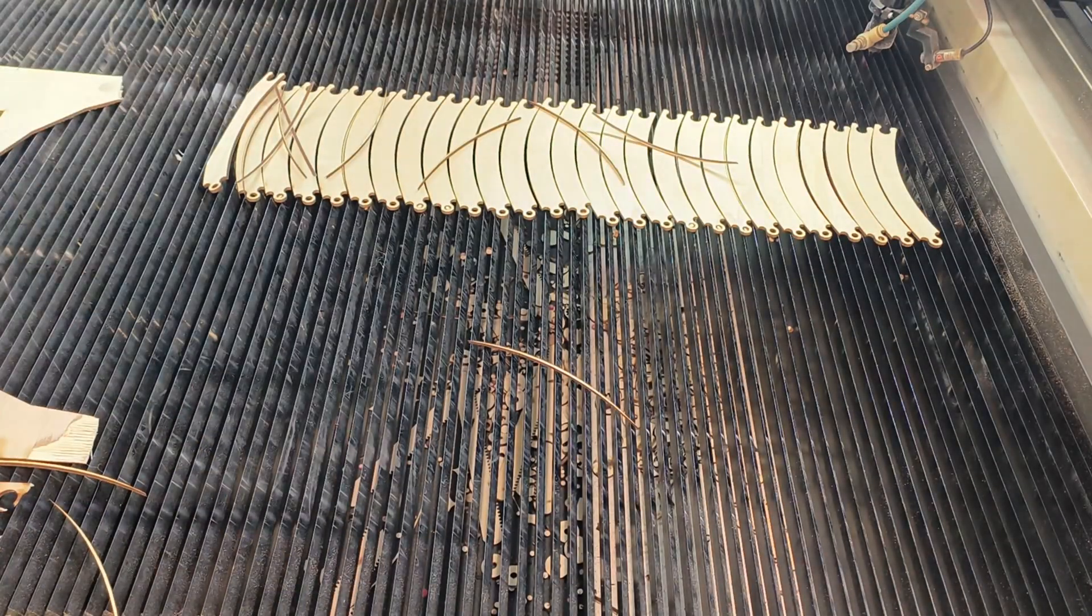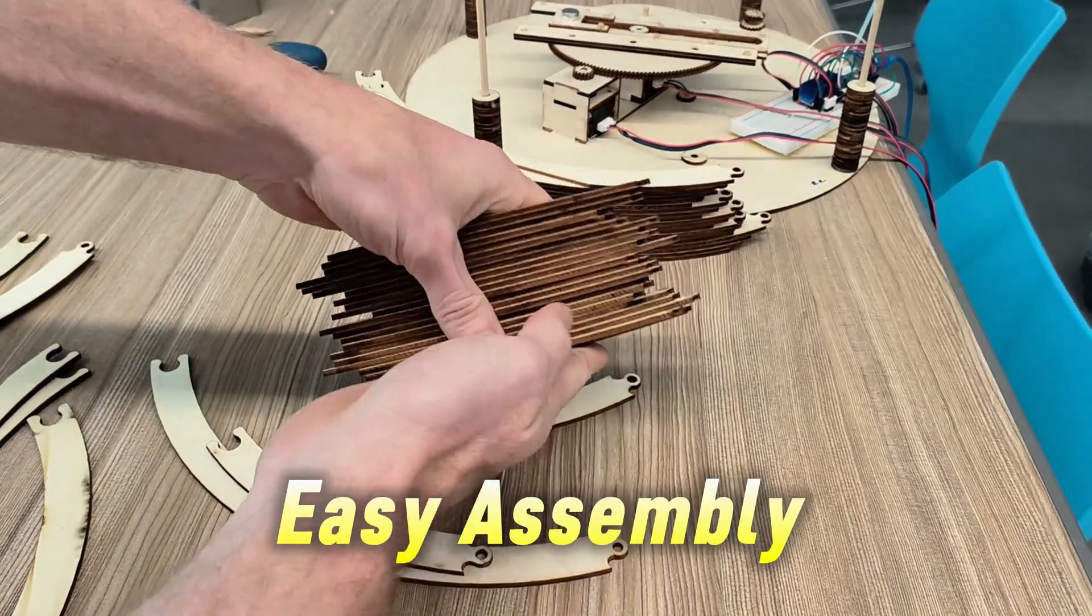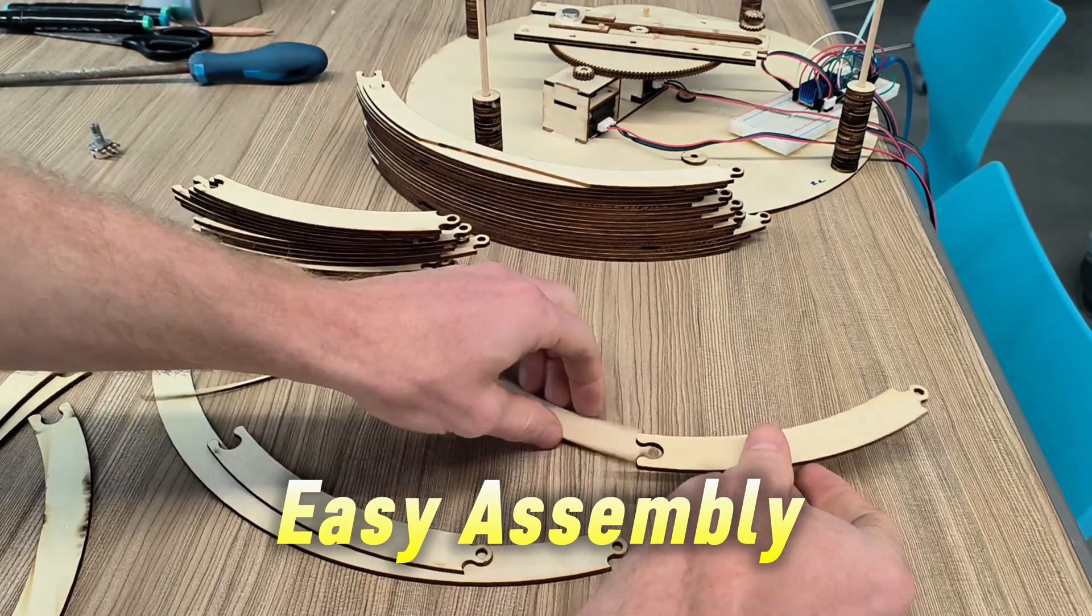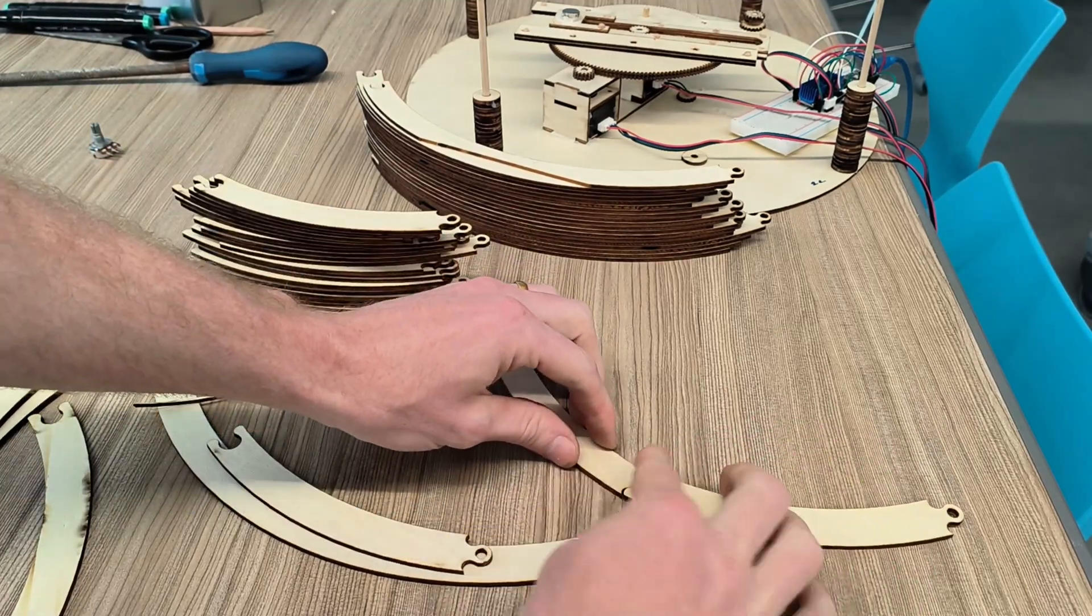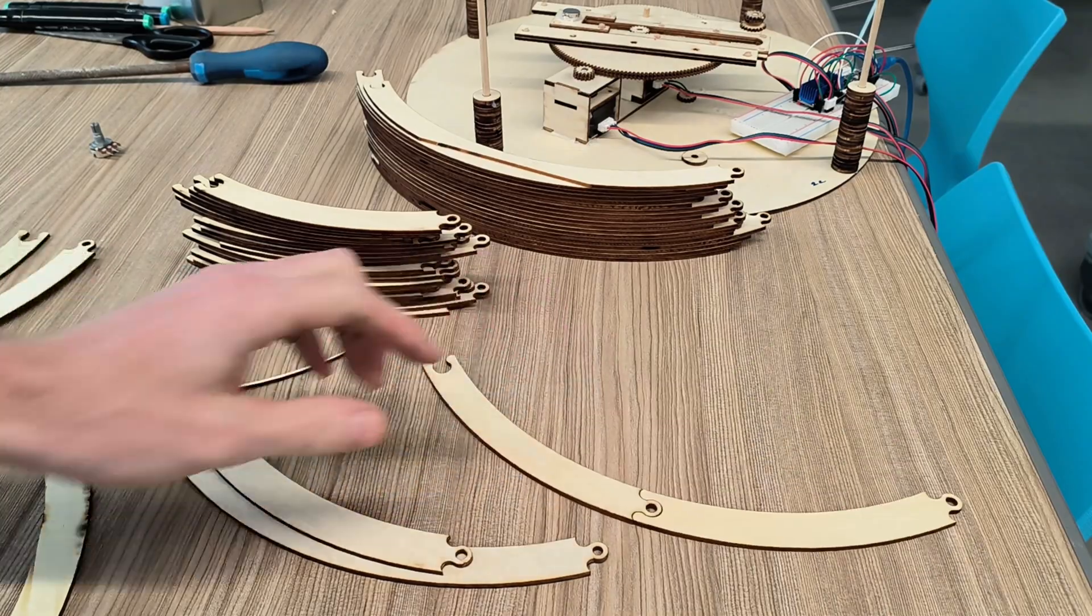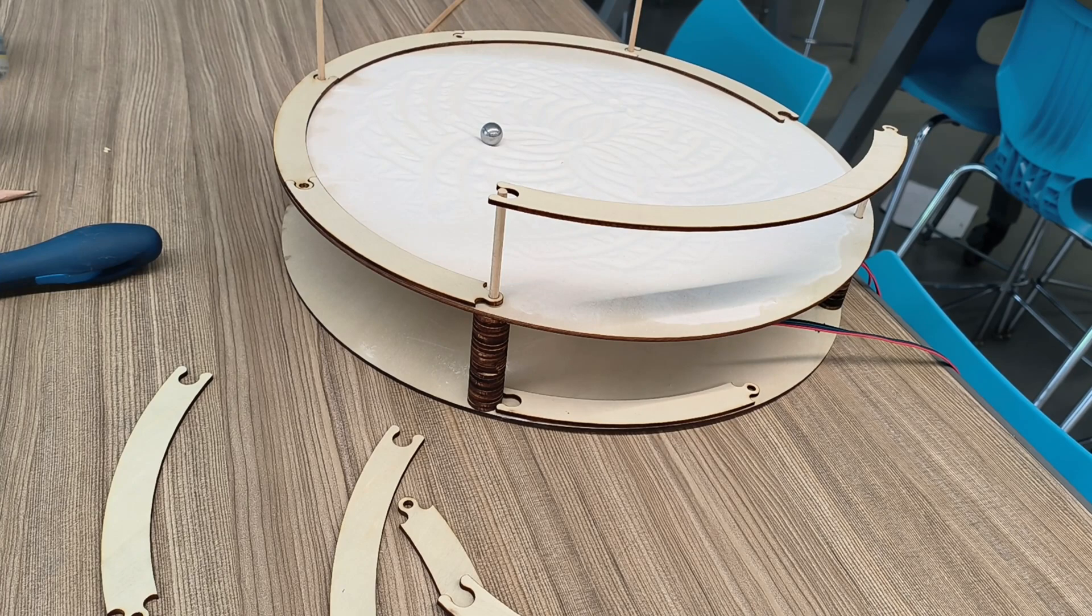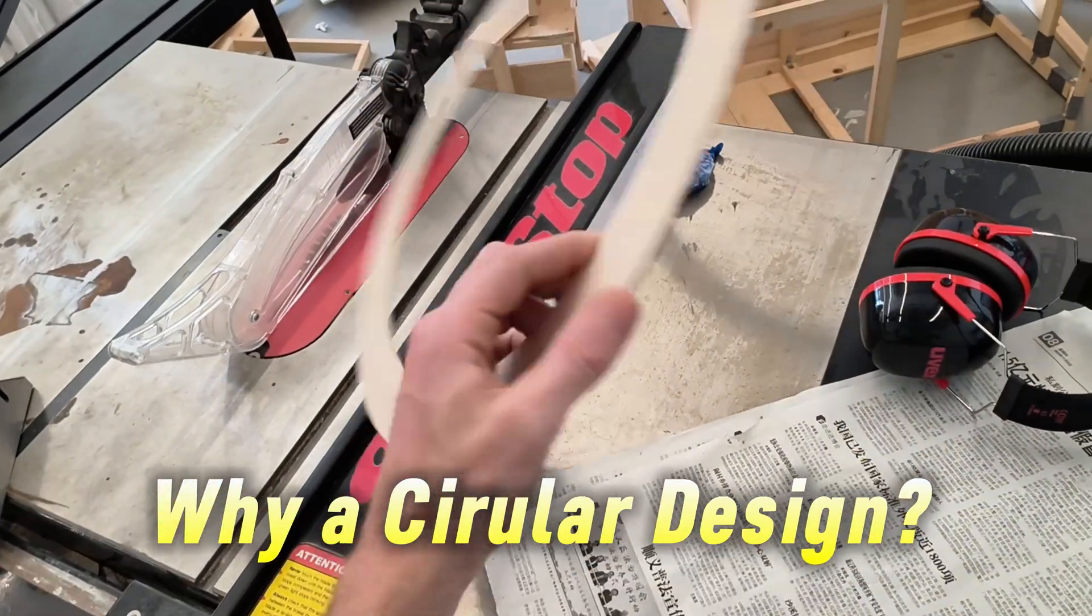The laser cutter is very useful because you can cut the parts so fast and it makes assembly so easy. I made it more like a puzzle, so it's easy to connect all the pieces, and then you can go around to make the walls on the top.